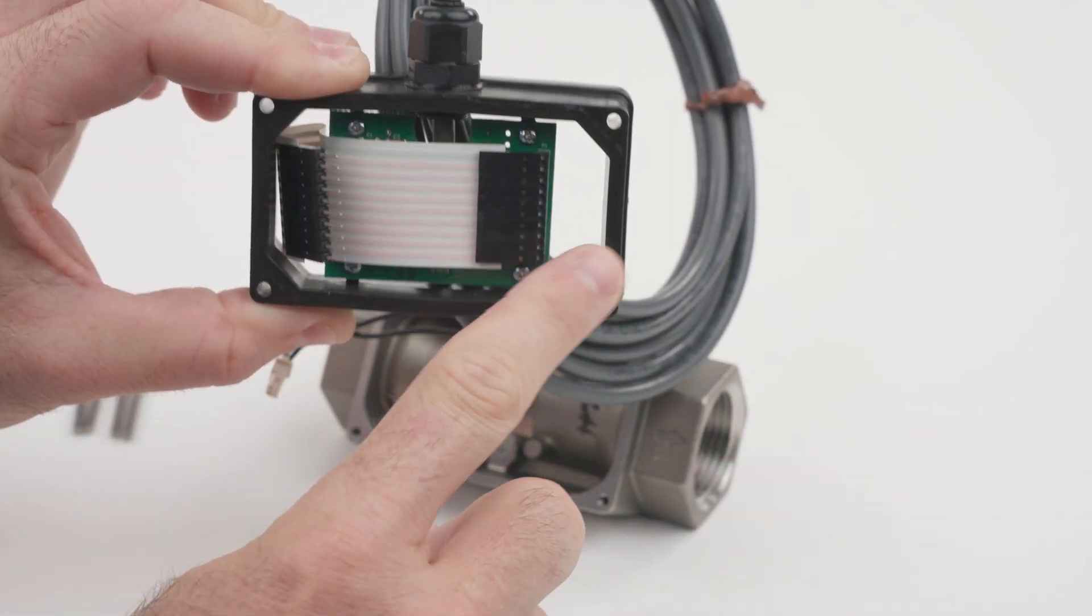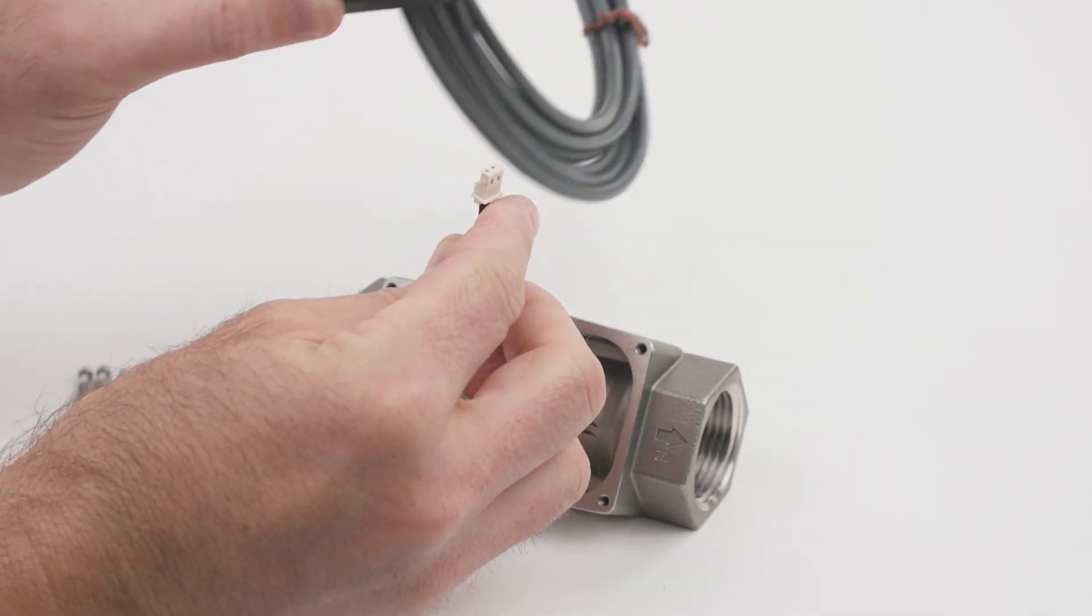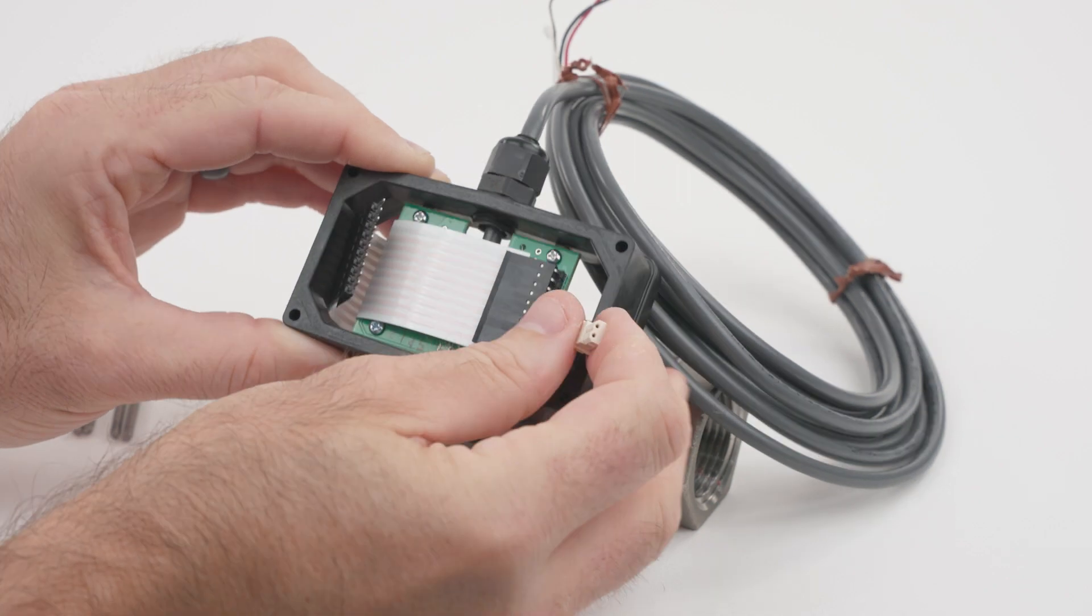Next, when installing the 4-220 milliamp module on the meter body, route the coil through the unobstructed gap in the module.